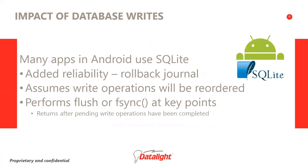Android is an application environment that runs on top of various Linux kernels. SQLite is native to Android, and many apps supplement ordinary file I/O with the secure solution of an SQLite database. This software adds its own reliability functionality by performing writes in an atomic fashion and then committing them. SQLite assumes that write operations will be reordered by the operating system and file system, so it performs a flush or fsync operation at key points, assuming those operations will not return until all pending write operations for that file handle have been completed.